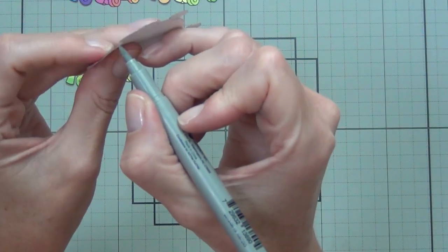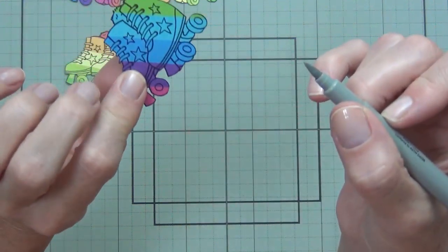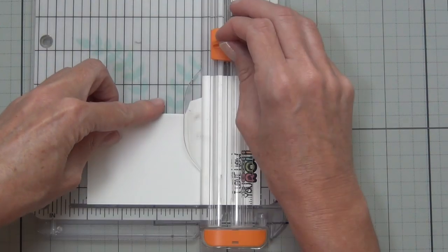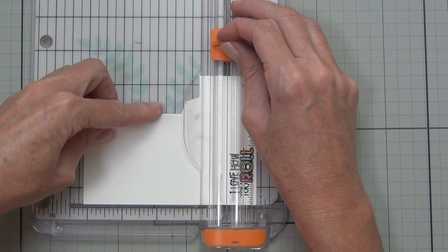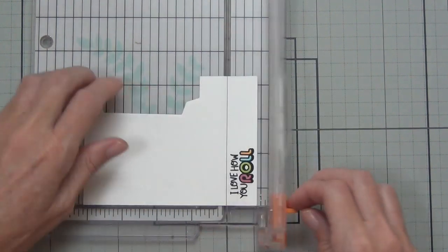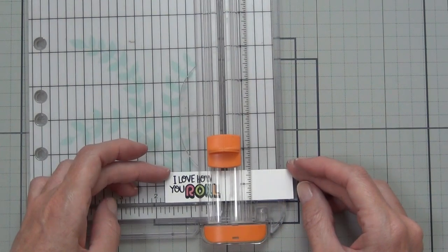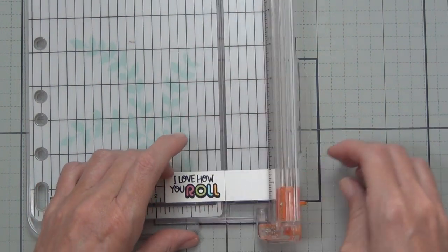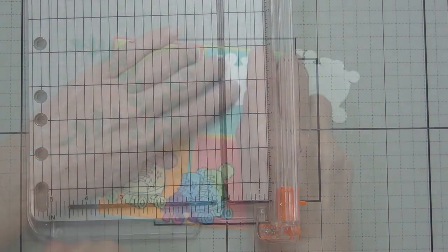One other trick that I do if I fussy cut and it's got a white core on the paper—I come in with a marker from the back of the die cut and just run a grey marker around the edge. Don't use your Copics because they bleed into the cardstock.